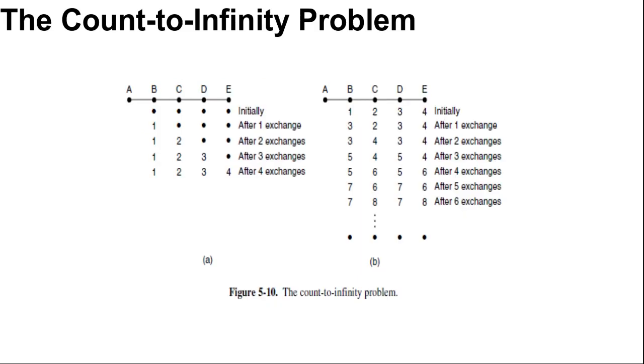On the second exchange, C notices that each of its neighbors claims to have a path to A of length 3. It picks one of them at random and makes its new distance to A, 4. You can see here in figure 4. And subsequent exchanges produce the other distances. Here you can see in figure B. And from this figure, it should be clear why bad news travels slowly. Gradually, no router has a value more than one higher than the minimum of all its neighbors. And gradually, all routers work their way up to infinity. But the number of exchanges required depends on the numerical value used for infinity. And for this reason, it is wise to set infinity to be the longest path plus 1.